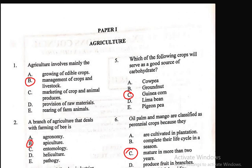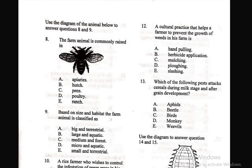Use the diagram of the animal below to answer questions 8 and 9. Question 8: The farm animal is commonly raised in — A) apiaries, B) arches, C) pens, D) poultry, E) ranch. This animal is a housefly, and it can commonly be seen in the poultry where it feeds on remains there. Question 9: Based on size and habitat, the farm animal is classified as — E) small and terrestrial. The animal is small, so it has to be small and terrestrial.